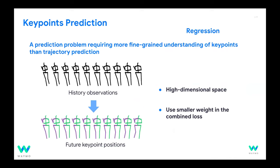The second auxiliary task is future keypoint prediction. Given a history of keypoints, the network predicts the keypoints at the next time frames. We use a smaller weight in the combined loss because this is a very hard task, but it is very useful for the network to learn what a sequence of keypoints means.